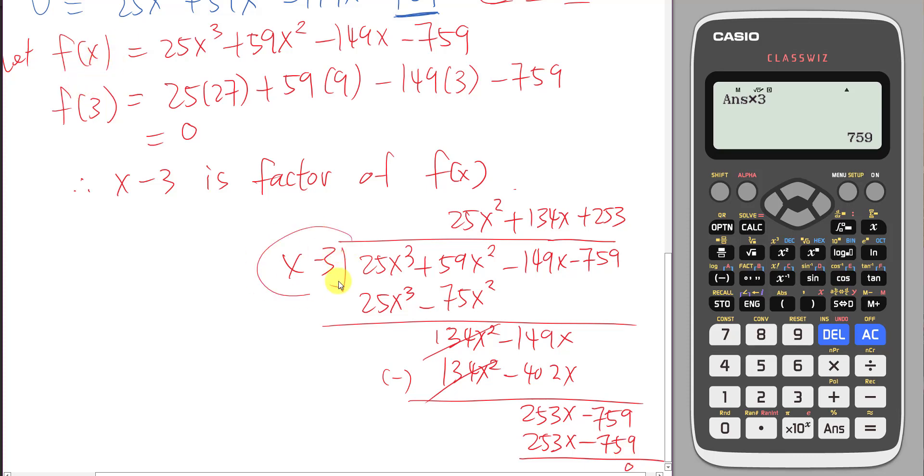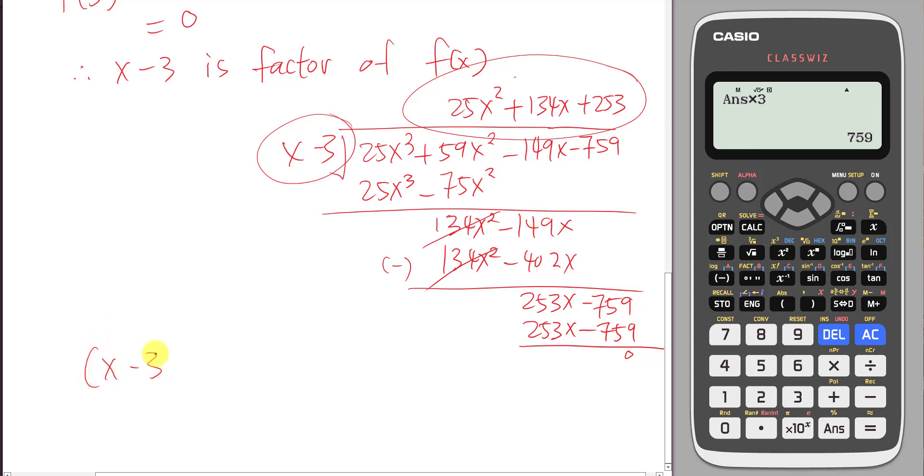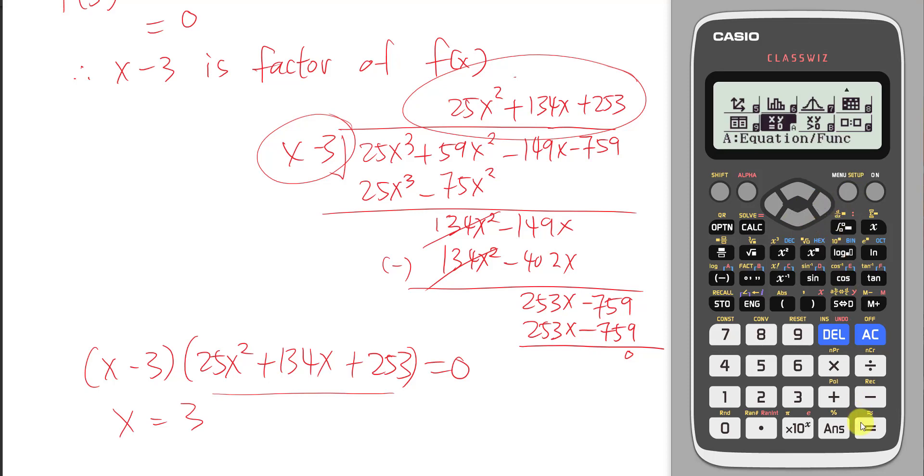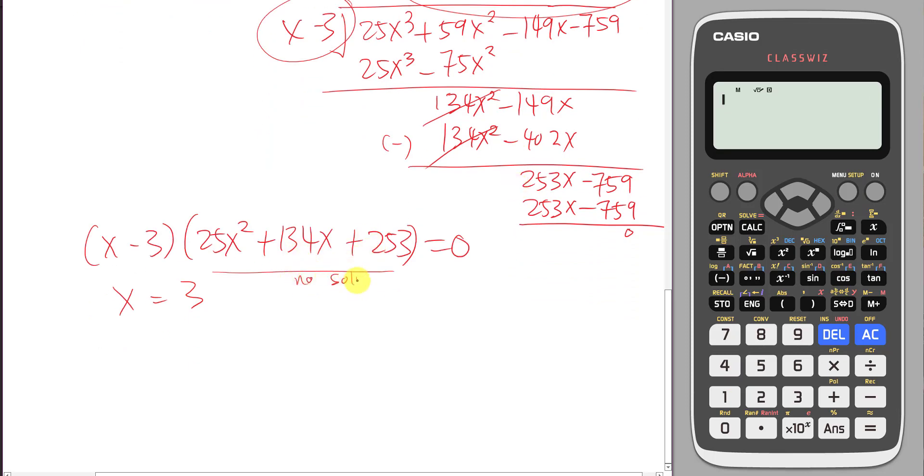So therefore I know the f(x) is basically formed by this one multiplying this one. And f(x) is equals to zero at the equation just now. So therefore I will just continue to solve. So since x minus 3 times 25x squared plus 134x plus 253 equals to zero. One of the x answer is 3. And this one definitely if you do the b squared minus 4ac you know here don't have any other answer already. But if you don't believe me you can just go to the equation here. Polynomial power 2. You insert this one 25, 134, 253. And you can see the calculator will come out the i. i is for the imaginary number which you will learn in complex number topics. But here I don't want to cover so much. So here have no solution. Has no further solution. So your only solution here will be x equals to 3.